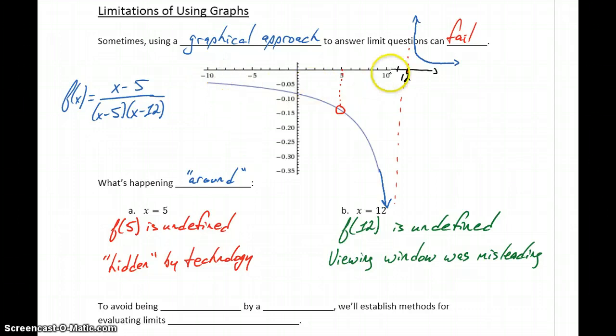Or the original domain that we were given for this graph didn't show us the complete picture. There was this very important part of the graph that was missing, that asymptote and that change in behavior of the function.